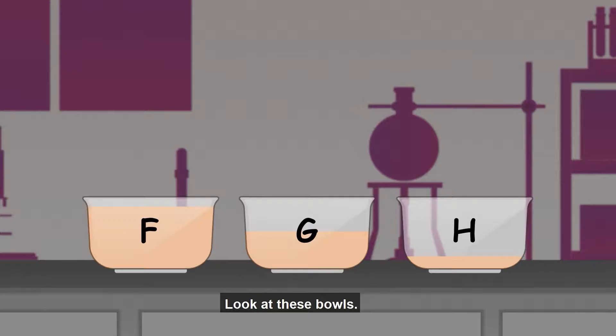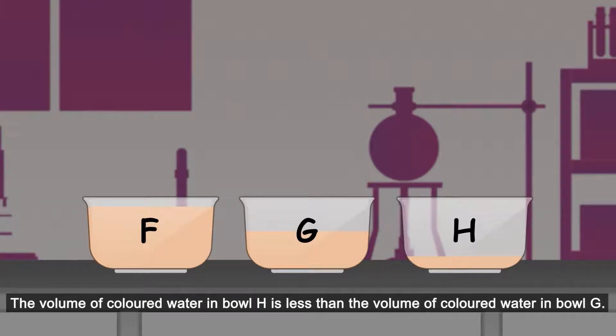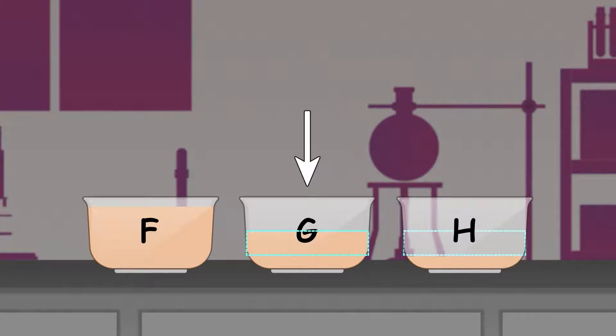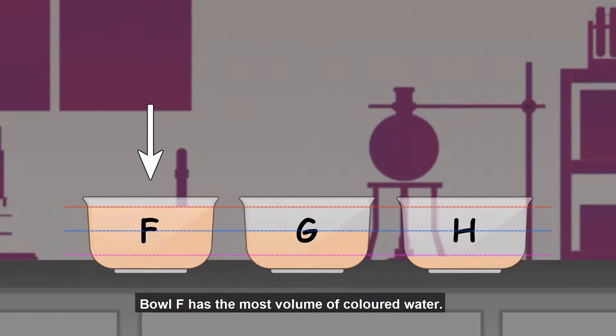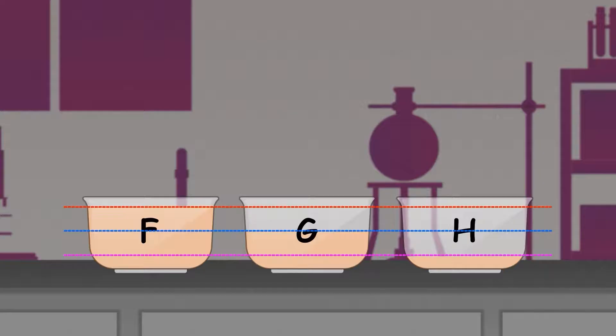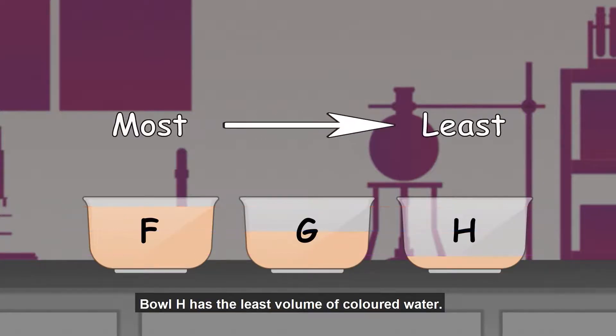Look at these bowls. The volume of colored water in bowl H is less than the volume of colored water in bowl G. Bowl F has the most volume of colored water. Bowl H has the least volume of colored water.